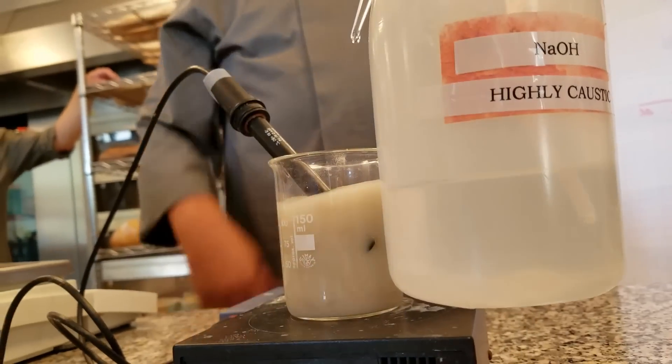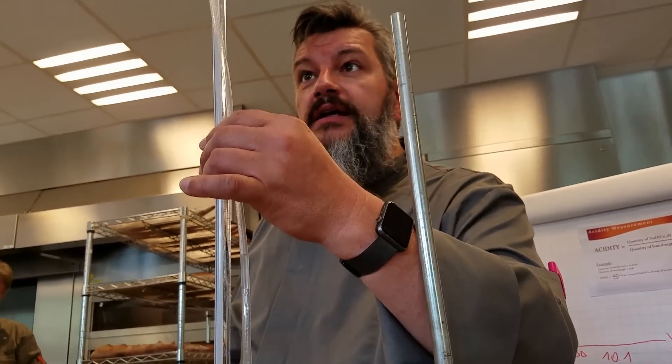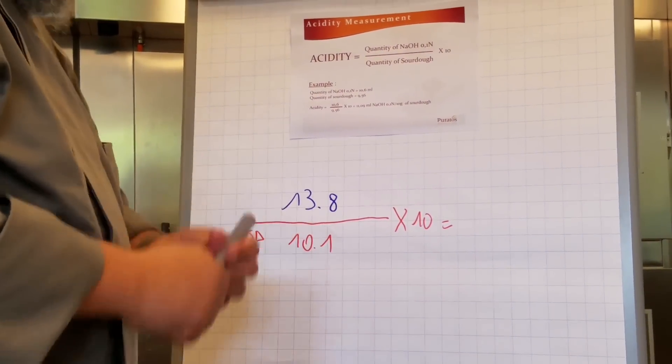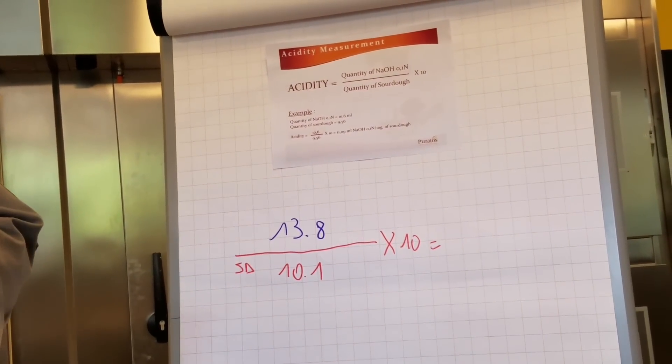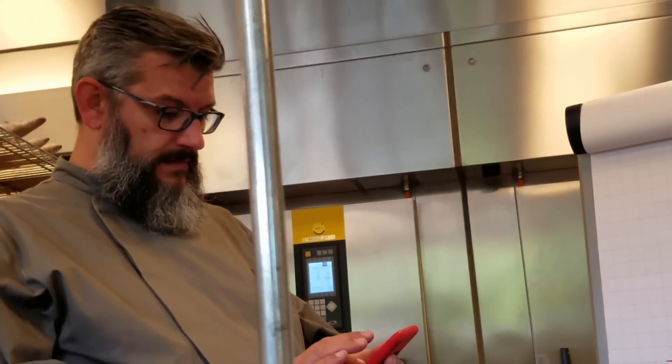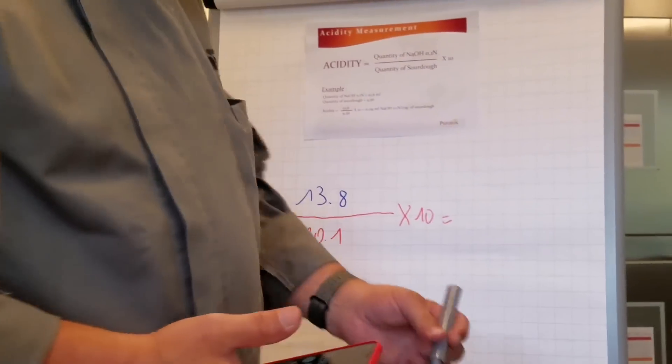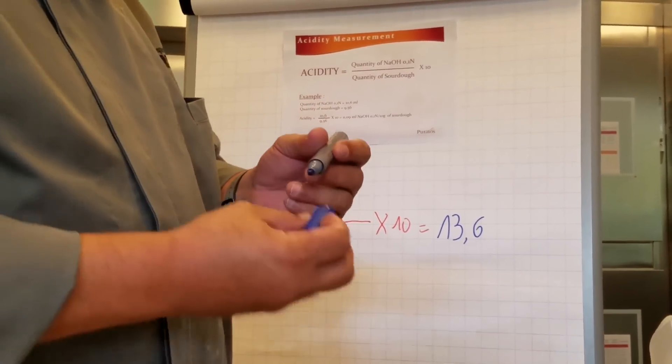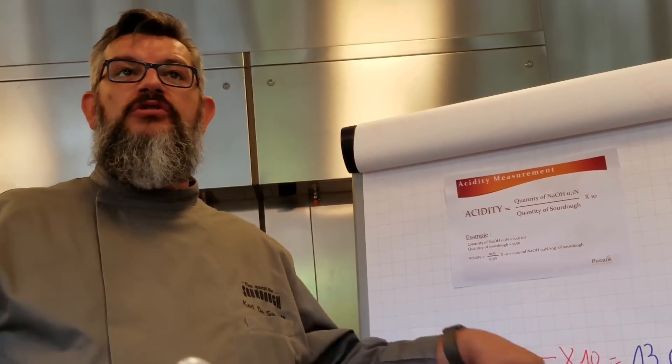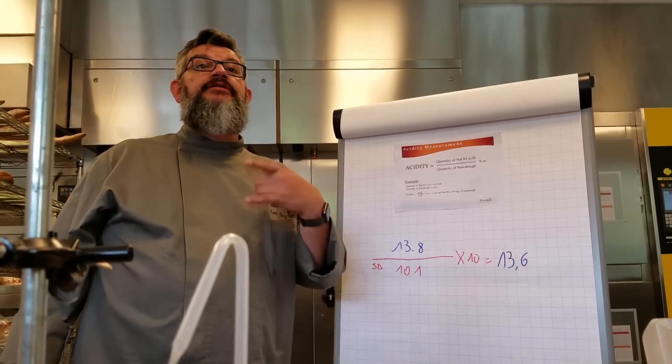So we reached 8.4. I've closed the valve and we used 13.89. So Manfred your sourdough has an acidity right now of 13.6.